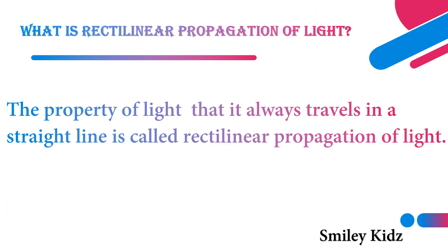Let us now know what is rectilinear propagation of light. The property of light that it always travels in a straight line is called rectilinear propagation of light. Now let us understand more about rectilinear propagation of light by a small activity.